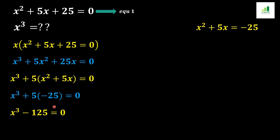Our equation is now x cubed minus 125 equal to 0. Moving minus 125 to the other side of the equation, it becomes positive 125. Therefore, x cubed equals 125, and this is our final answer.